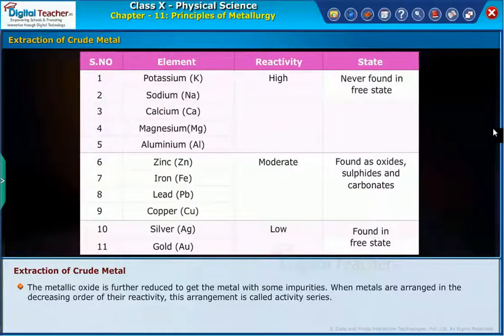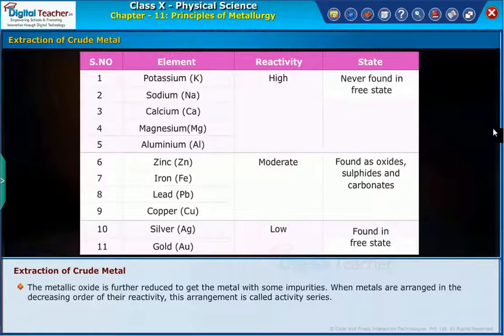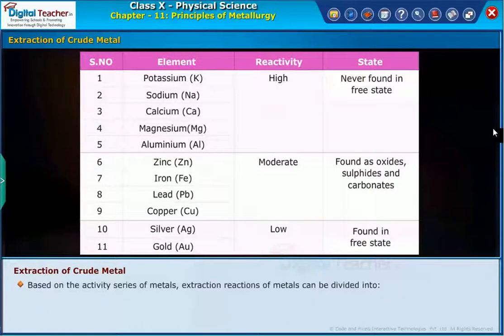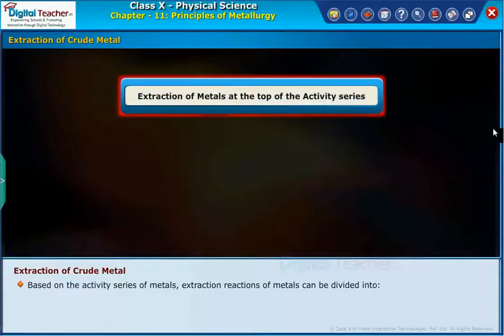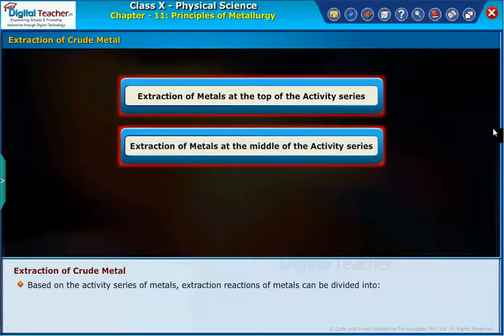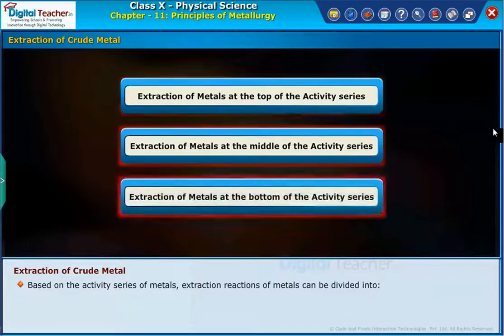When metals are arranged in the decreasing order of their reactivity, this arrangement is called the activity series. Based on the activity series of metals, extraction reactions of metals can be divided into: extraction of metals at the top of the activity series, extraction of metals at the middle of the activity series, and extraction of metals at the bottom of the activity series.